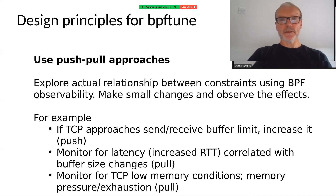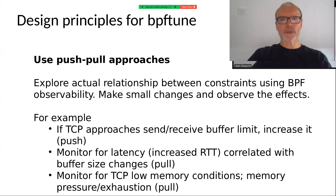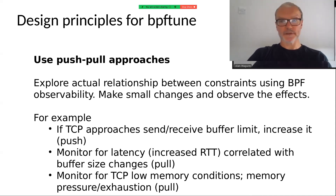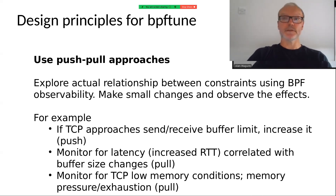A key design principle is that when we're actually trying to find the right answer for a tunable, we want to take a machine learning approach and make small changes incrementally, then evaluate the effects of those changes. This allows us to examine the relationship between the constraints relevant to a particular tunable. For example, for TCP buffer sizing, if we approach one of the buffer limits we tend to increase — a push upwards for the value — but we also want to monitor for any negative effects, because in that case we want to undo that change.